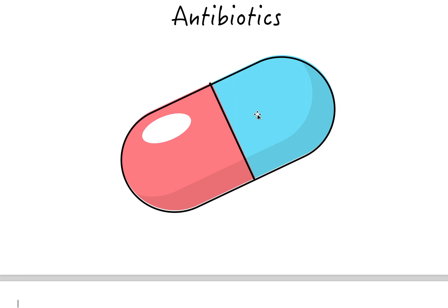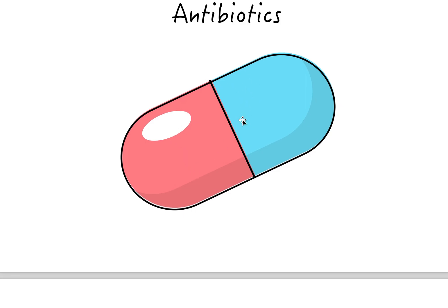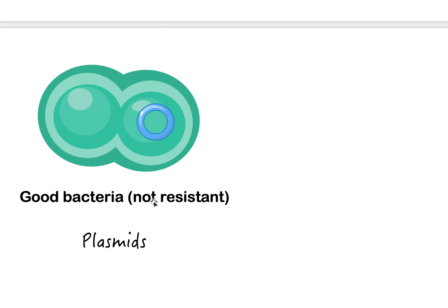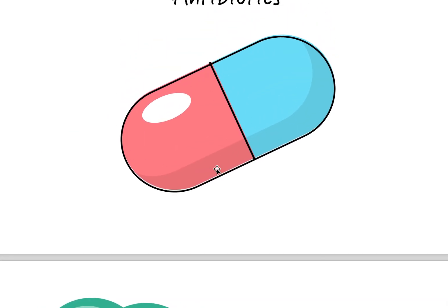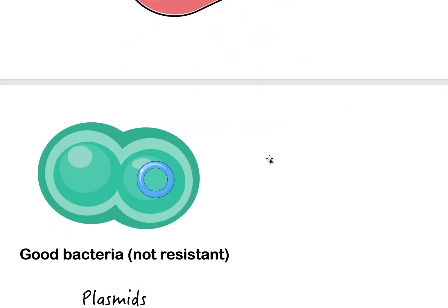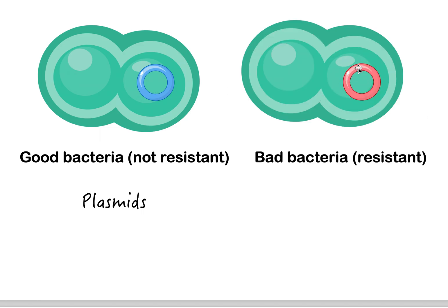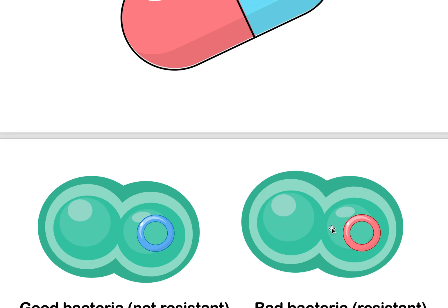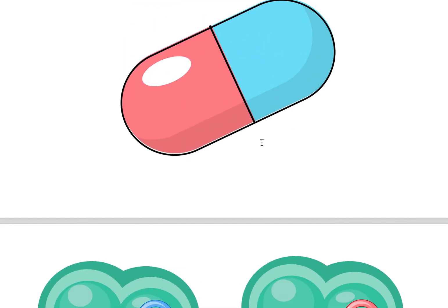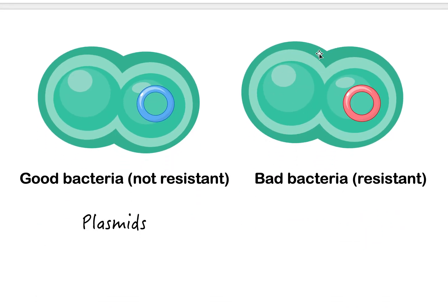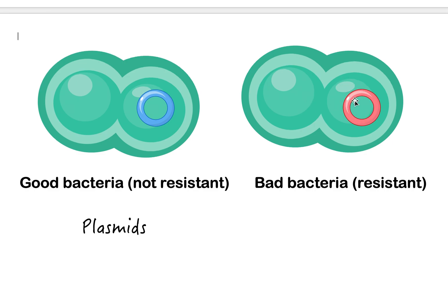The one with the blue plasmid is not able to defend itself against this antibiotic — it is not resistant. If it comes into contact with an antibiotic it will die; its genetics cannot code for a survival mechanism. Then we have the one with the red plasmid — the bad bacteria. It carries a plasmid that has information on how to defend the bacteria against antibiotics, so this one is resistant and can defend itself.